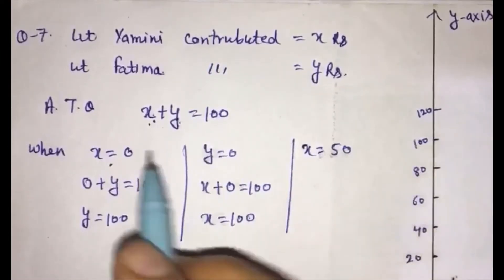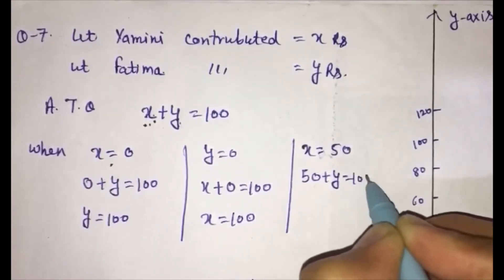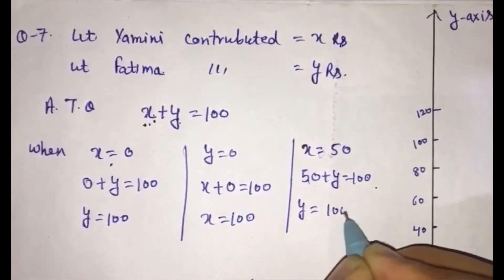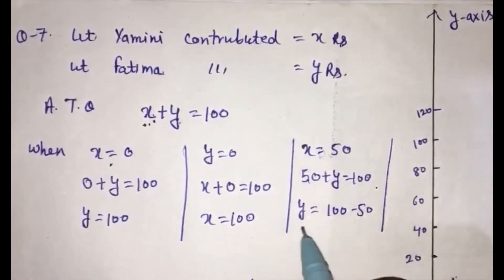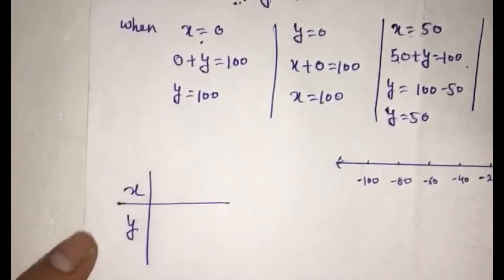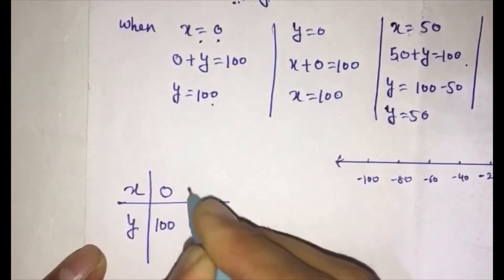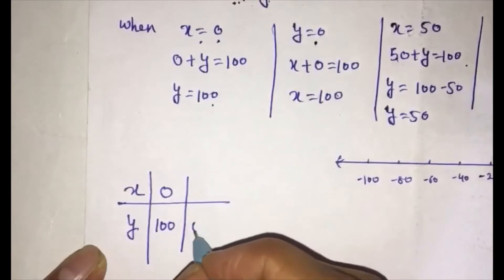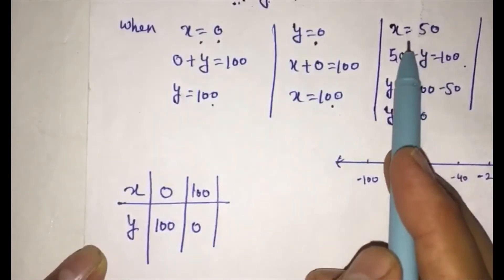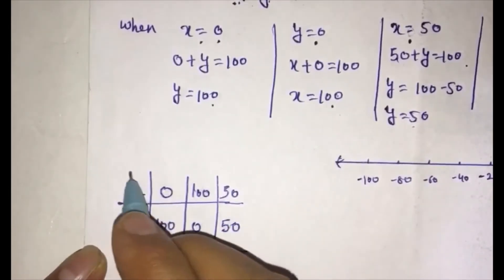When we put X equal to 50, we get 50 plus Y equal to 100. Shifting 50 to the right side, Y equals 100 minus 50, so Y equals 50. Our final table: when X is 0, Y is 100; when X is 100, Y is 0; when X is 50, Y is 50.